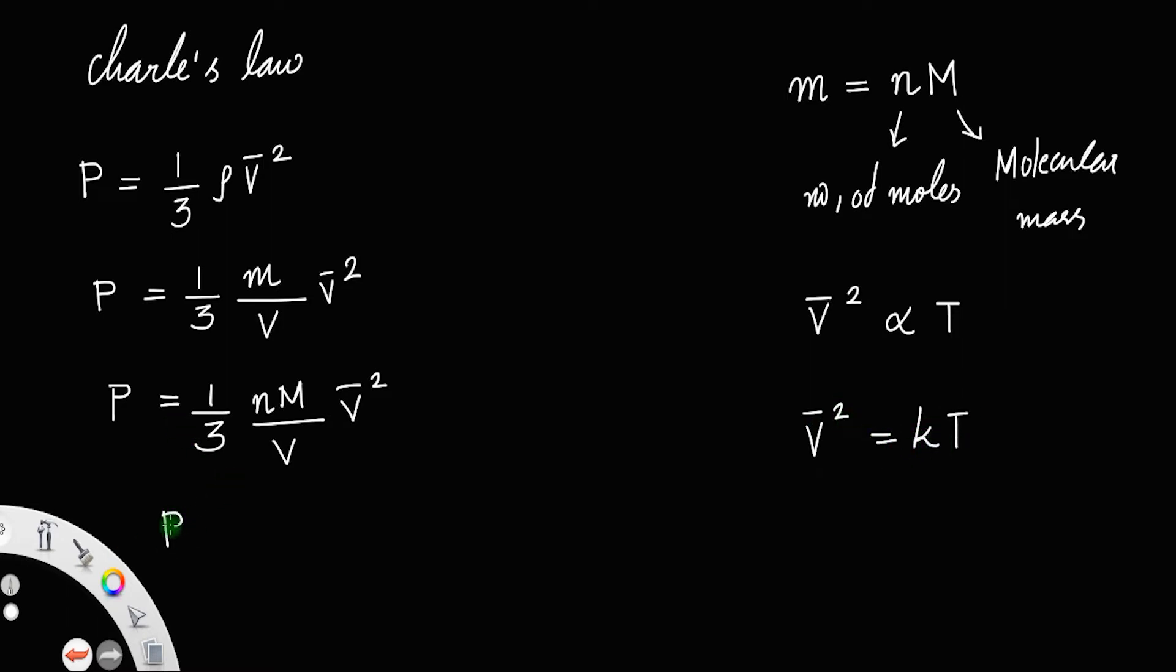So, P is equal to nM by 3V times kT. Instead of V square you can write kT.